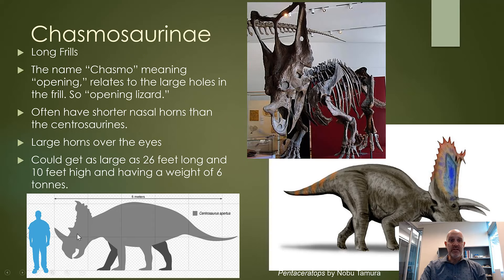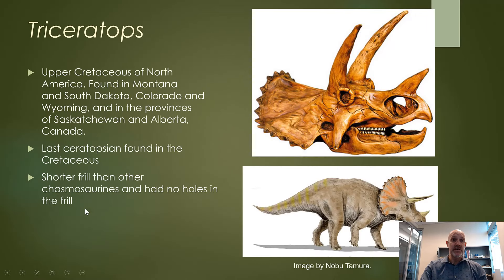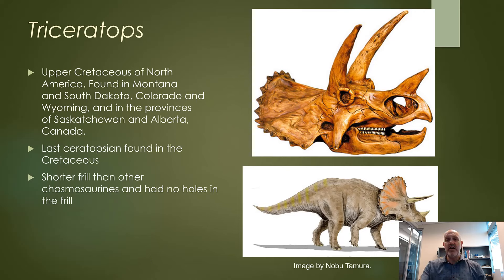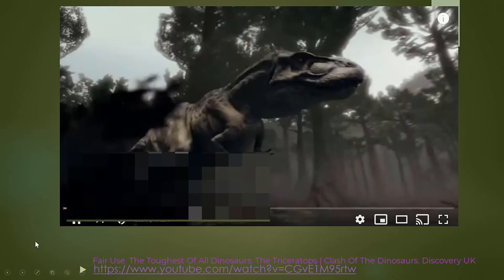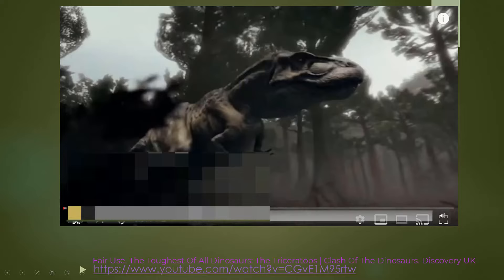These creatures could get pretty big — 26 feet long, up to around 10 feet high, and weighing about six tons. Triceratops are found only in North America and Canada. Interestingly, as a chasmosaurid, Triceratops doesn't have holes in the frill, but it does have the big horns over the eyes. There's a video here of dinosaur experts talking about Triceratops as a killing machine with regard to T-Rex — an amazing animal, absolutely enormous, maybe four or five tons.